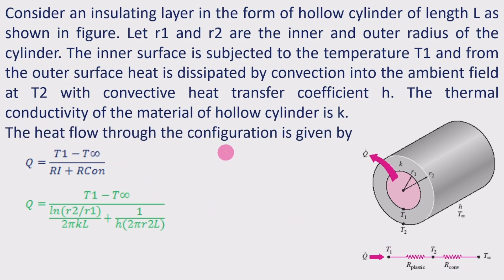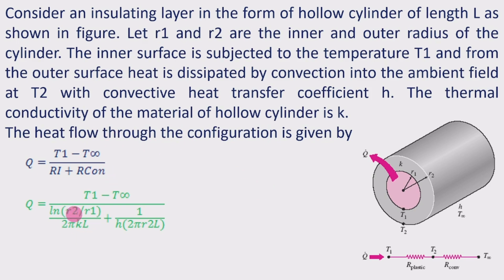The rate of heat flow through the configuration is given by: Q = (T1 − T_infinity) / (R_insulation + R_convection). The resistance for the hollow cylinder is ln(r2/r1) / (2πkL), and the convection resistance is 1 / (h · 2πr2L). So Q = (T1 − T_infinity) / [ln(r2/r1)/(2πkL) + 1/(h·2πr2L)]. This is taken as equation 1.